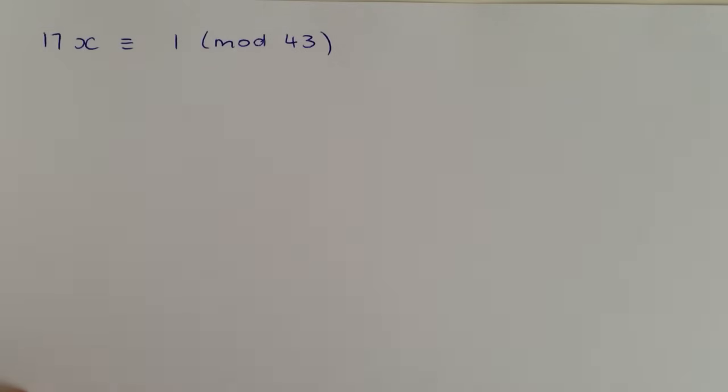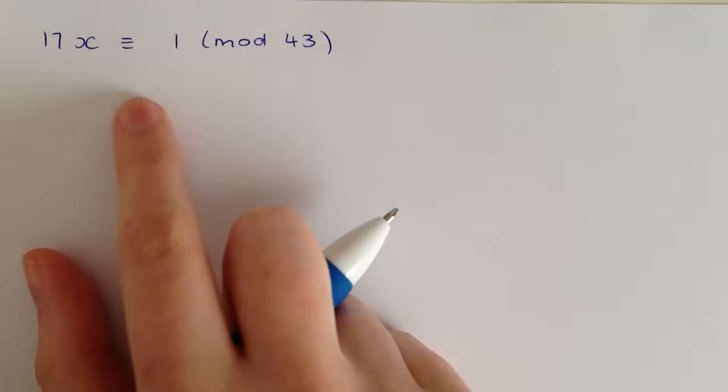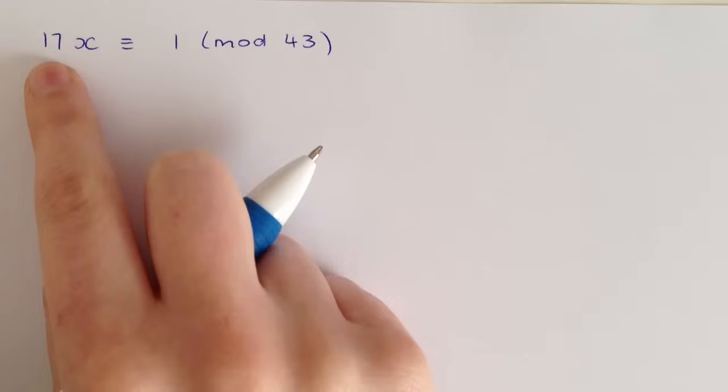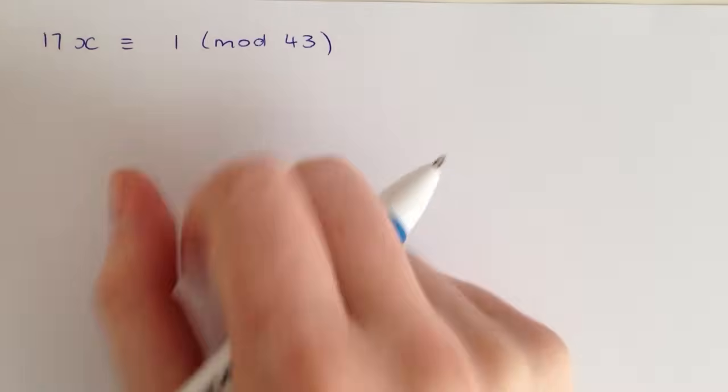Okay, so we're doing inverse mod numbers. We'll start with the example 17x is equivalent to 1 mod 43. That's just asking what number times 17 will give you 1 when it's mod 43.